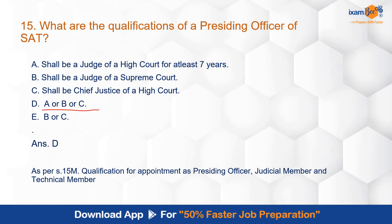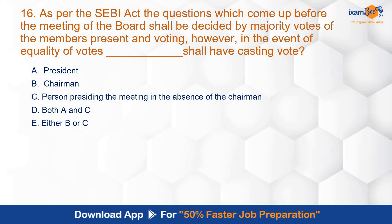Question 16: As per the SEBI Act, questions which come up before a meeting of the board shall be decided by majority votes of members present and voting. However, in the event of equality of votes, who shall have a casting vote? The correct answer is E — B or C: either the chairman or the person presiding the meeting in the absence of the chairman. This is section 7, subsection 3 of the SEBI Act.